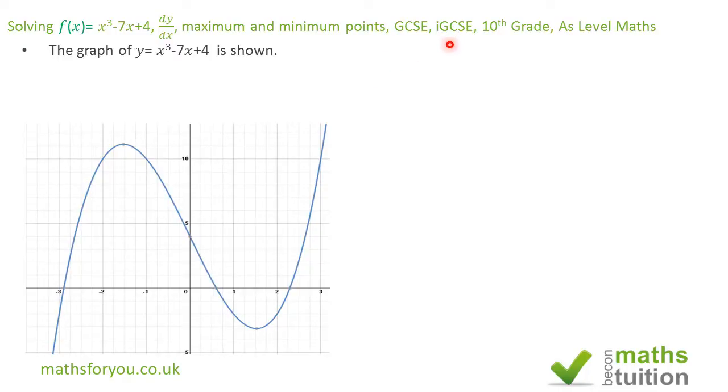Now for IGCSE the question might be phrased plot a graph of f(x) is equal to x³ minus 7x plus 4. Right now they might just give you a table with ordered pairs with some empty spaces for you to fill in. Also in that case you've got to be very careful because you've got x³ there but there's no x squared so you've got to be very careful when you plot such a graph.